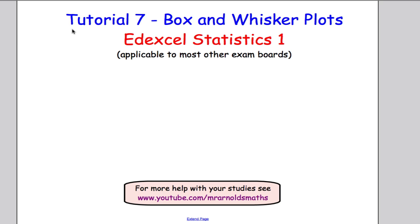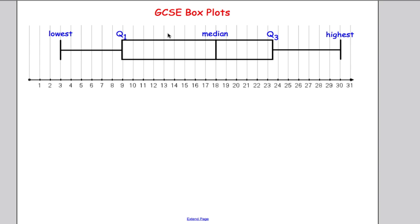Okay, so we're going to start by just doing a quick reminder of what we should already know from GCSE on box and whisker plots. So a box and whisker plot looks like this at GCSE. The middle line here was our median. The end of the box was Q3, or our upper quartile, and this line here was our lower quartile, or Q1 in this case.